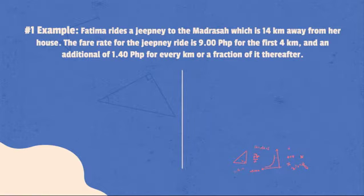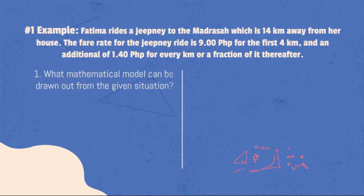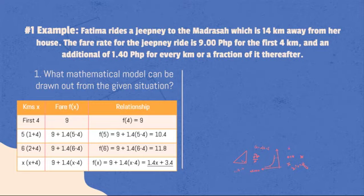For example, Fatima rides a jeepney to the madrasa which is 14 kilometers away from her house. The fare rate for the jeepney ride is 9 pesos for the first 4 kilometers, and an additional of 1.40 pesos for every kilometer or a fraction of it thereafter. From the problem statement, what mathematical model can be drawn out? The table shows the relationships that can be drawn out by filling in the x values of the total distance, and the y values or the total fare that needs to be paid.